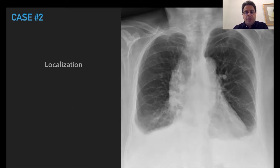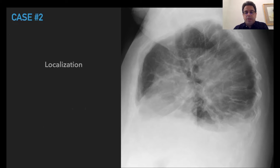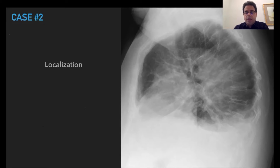In case number two, the PA chest x-ray shows that the mediastinum is wide. On the lateral view, there is pleural effusion, some atelectasis, and a mass-like opacity over the posterior mediastinum.